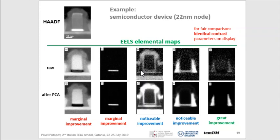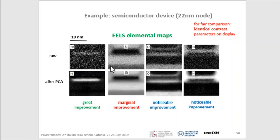Another semiconductor device shows the same effect of PCA. In this case, the silicon signal is quite strong because I use the L edge, not K edge, so silicon is not improved much. But the weaker signals are really denoised. Our main target in that case was minor boron content, which is almost unseen before PCA but well visible after PCA. The same gate, but zoomed, and you start to see at the bottom of the gate a thin hafnium oxide layer — and again, to see it clearly, you do need PCA.